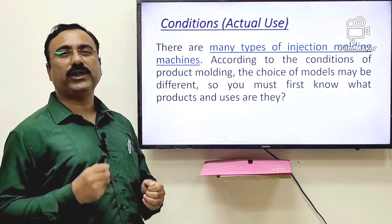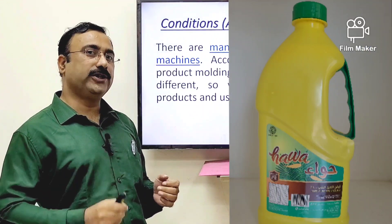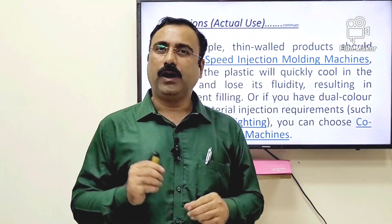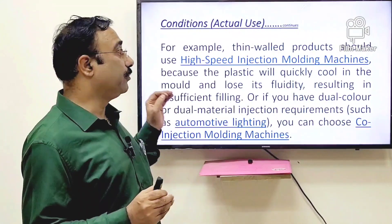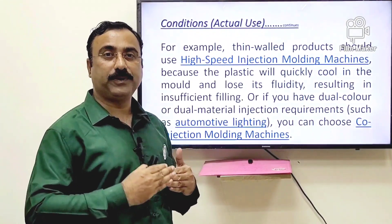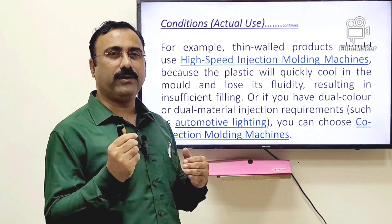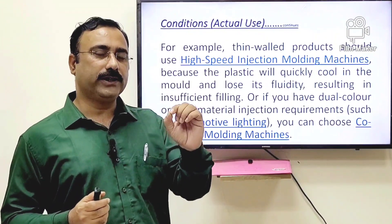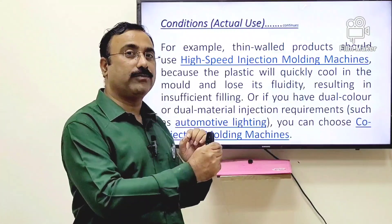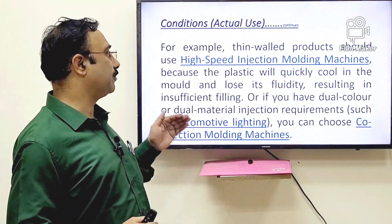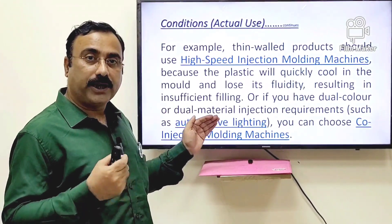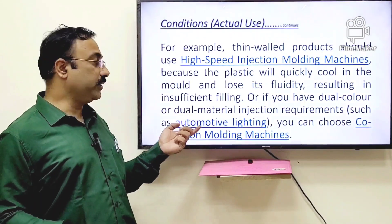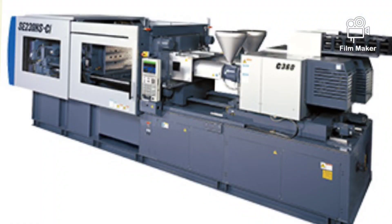Condition means what the actual use is, or how the consumer will use the plastic product. For example, if you have a thin-walled product being molded, you must use a high-speed machine — because due to the thin wall thickness, as soon as you inject the material into the mold it loses fluidity and the material stops moving, resulting in a short-molded product. Similarly, if your product has dual color or multiple colors, you need to select a co-injection molding machine.